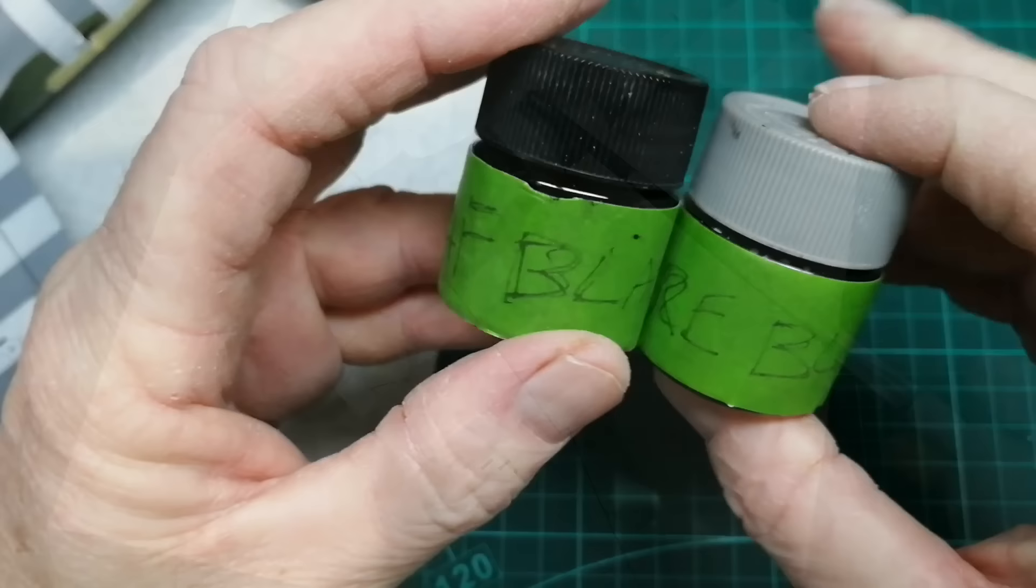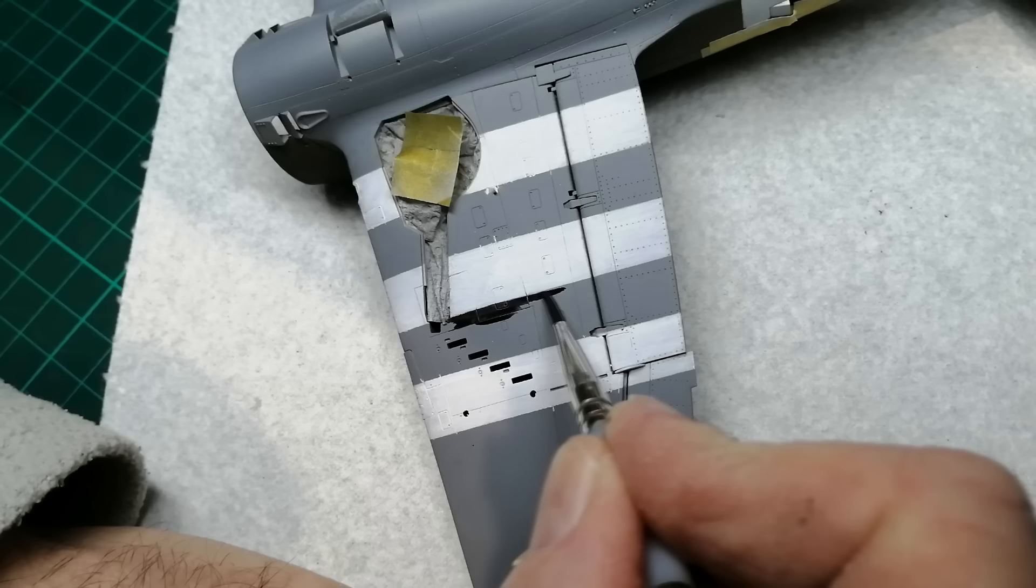Now that white is dry, I'm going to apply the black. Once again I've got a couple of custom mixed blacks, so I'll just pick one. And once again I'll apply these by brush. But black is going to be a lot more easy to apply. So all I need here is two light coats of black applied by brush.